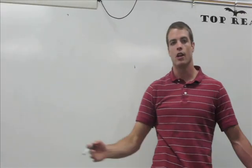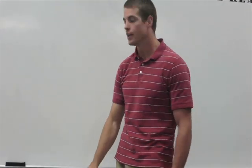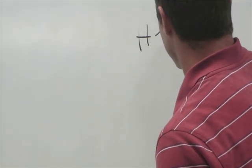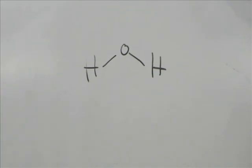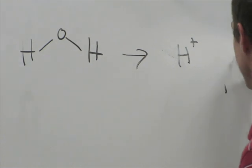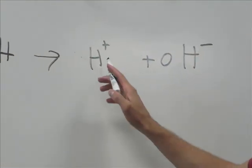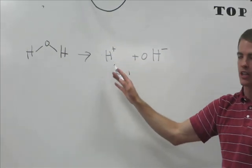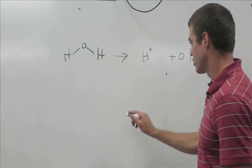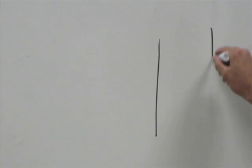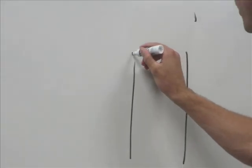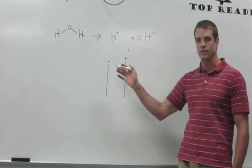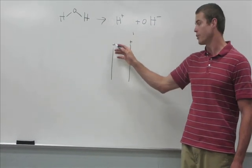Electrolysis has been used for decades to produce hydrogen gas. Let's draw our water molecule and say it dissociates into the proton (H⁺) and the hydroxide ion (OH⁻). For simplicity we'll use H⁺, though in reality it exists as H₃O⁺. Now let's talk about the electrodes. The negative electrode is the cathode, and the positive electrode is the anode. We have protons and hydroxides floating in solution.